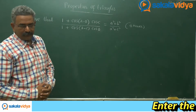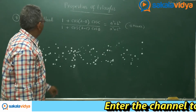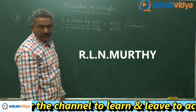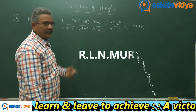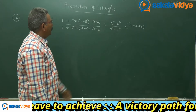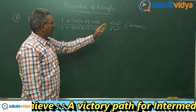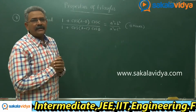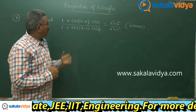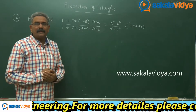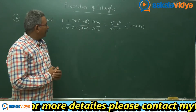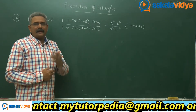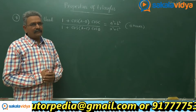Let us solve one more problem. Prove that 1 plus cos of (a minus b) into cos c, upon 1 plus cos of (a minus c) into cos b, equals a squared plus b squared by a squared plus c squared. Regarding this problem, it is better to change cos c in terms of cos of (a plus b), and cos b in terms of cos of (a plus c), using the condition a plus b plus c equals 180 degrees.